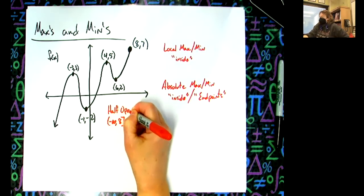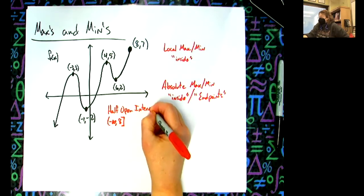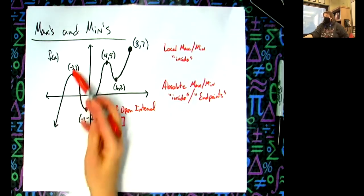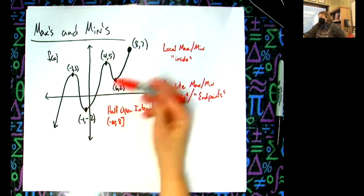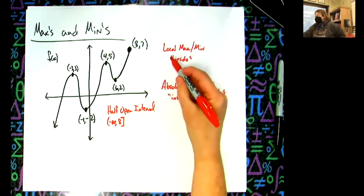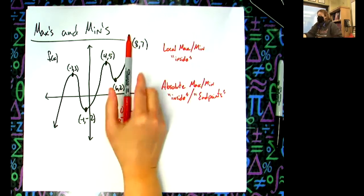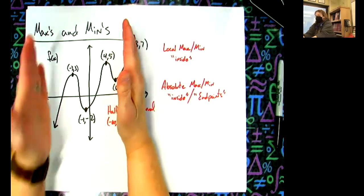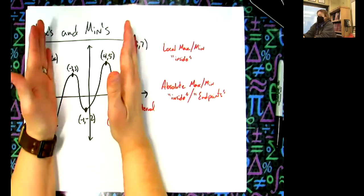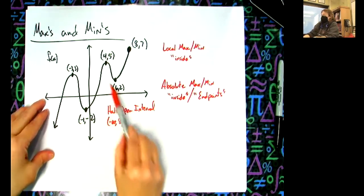Half open interval. I've just defined this function on a half open interval. Negative infinity goes forever and ever here, and then it closes up here. So my local maxes and mins are on the inside of the function. Think of this as being an edge of my function and kind of infinity down here being an edge. So when I look at the inside, I'm just looking at basically these four points in here.